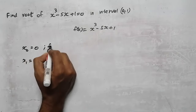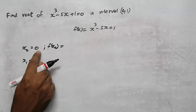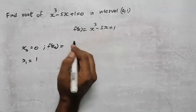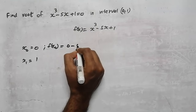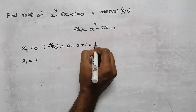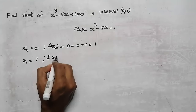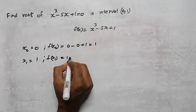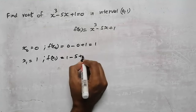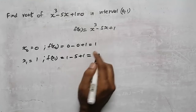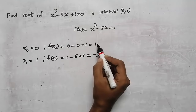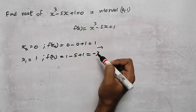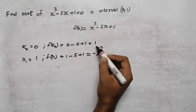At x₀ equal to 0, we need to find f(x₀). Wherever there is x, substitute 0. So the equation becomes 0 cubed minus 5 times 0 plus 1, which equals 1. For f(x₁), substitute x equal to 1: 1 cubed minus 5 times 1 plus 1 gives 1 minus 5 plus 1, which is minus 3. We have a positive and a negative number, so a root lies between them.